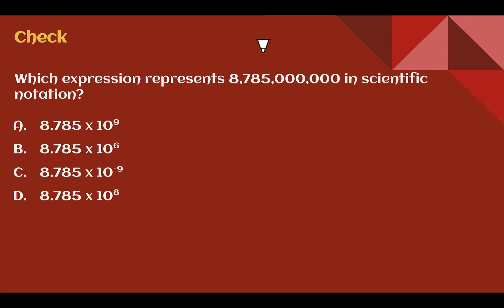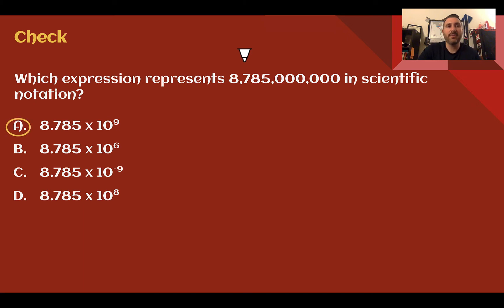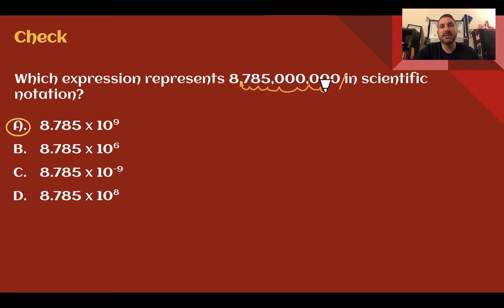Check your understanding: which expression represents the given number in scientific notation? You should have said A: 8.785 times 10 to the ninth. The decimal goes between the first and second digit to make it between 1 and 10, then move the decimal to the end — that's 1, 2, 3, 4, 5, 6, 7, 8, 9 spaces. So the exponent is 9. Since the number is larger than 10, we know the exponent has to be positive, which also rules out C.